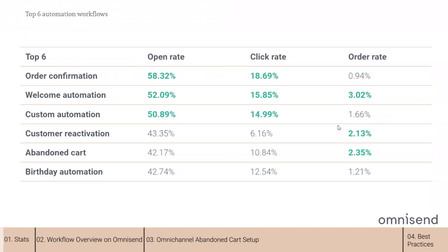I will quickly show you the statistics for the six top automation workflows on Omnisend. Automation open rates are way higher than the average email campaign open rates in the industry, which are approximately 20%. If we look into open and click rates for order confirmation, welcome automation, and custom automation, those have the greatest reach. If we look into order rates, the winning workflow is welcome automation with a 3.02%, followed by abandoned cart and customer reactivation.